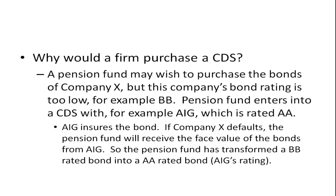Why would a firm purchase a CDS? For example, a pension fund may wish to purchase the bonds of a company — let's call it Company X — but pension funds need to hold very safe, investment-grade assets. If Company X's bond rating is too low, say double-B, the pension fund can enter into a CDS with another company. AIG wrote a whole lot of credit default swaps back in the mid-2000s, which was one of the reasons for the financial crisis and why the government had to bail them out. At the time, AIG was rated double-A.